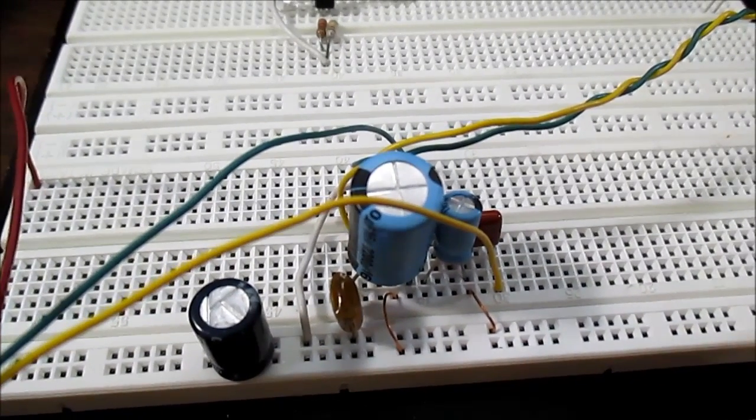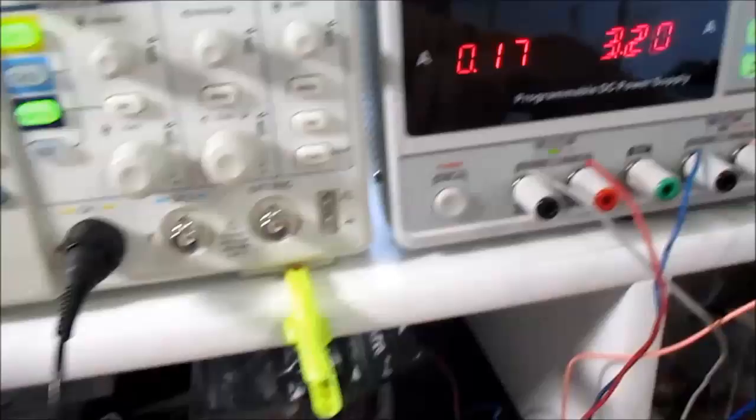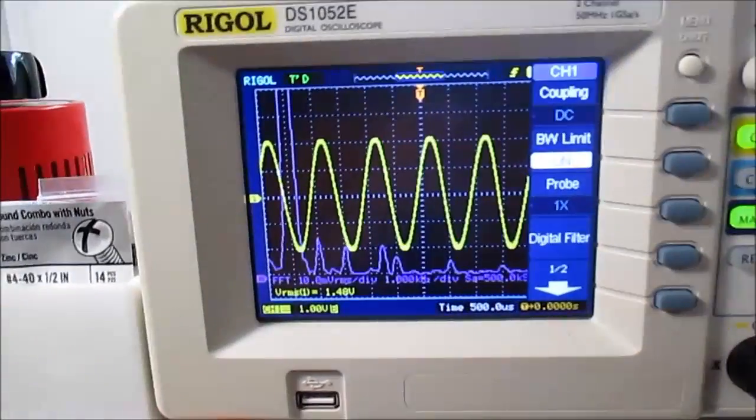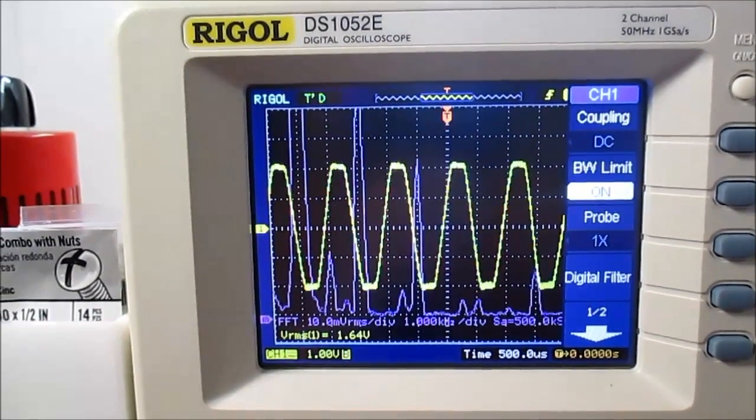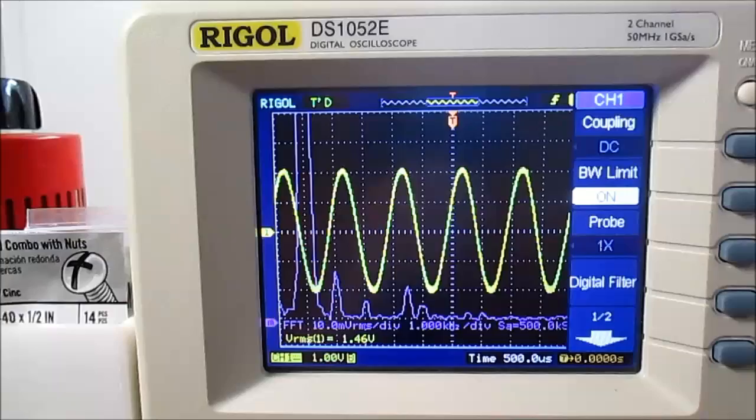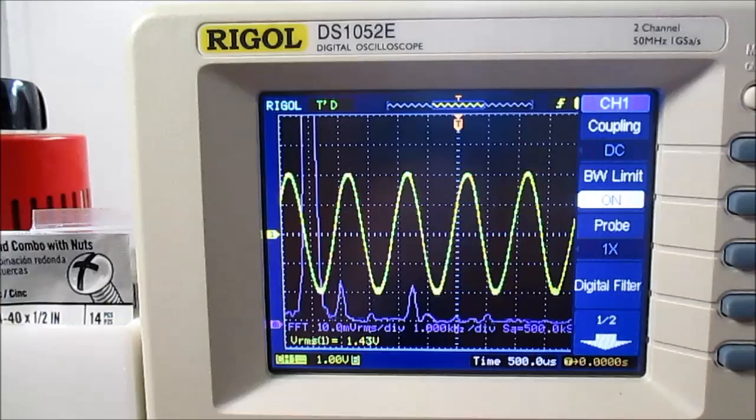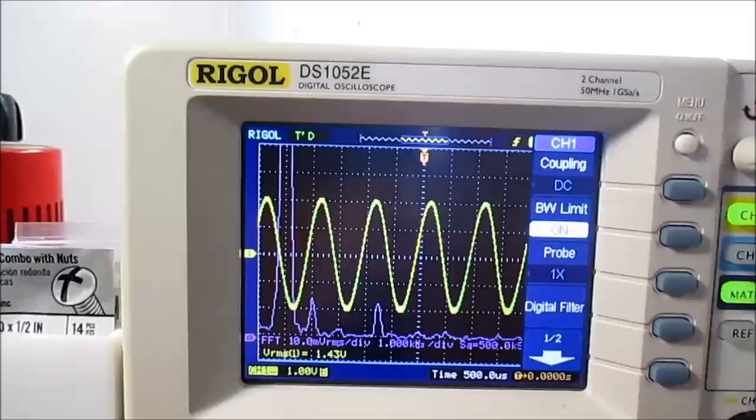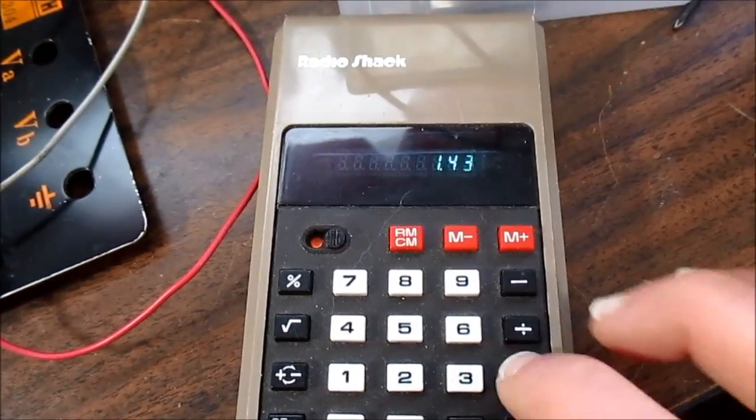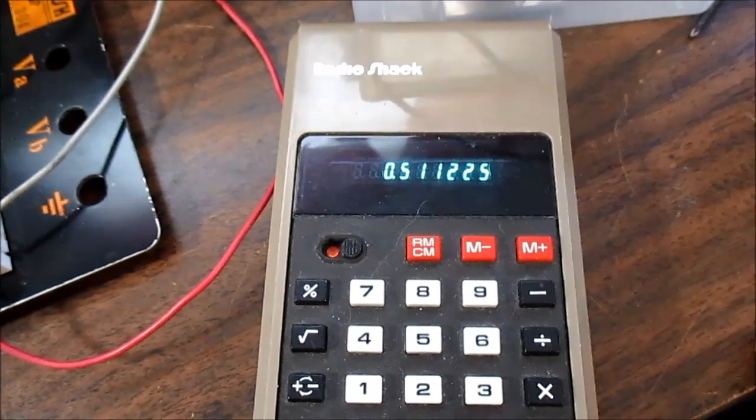Power test time. 4 ohm load is connected, running at 6 volts for our first power test. There's clipping. Tune out those harmonics. One point four three volts. One point four three volts squared divided by four. Half a watt at six volts.